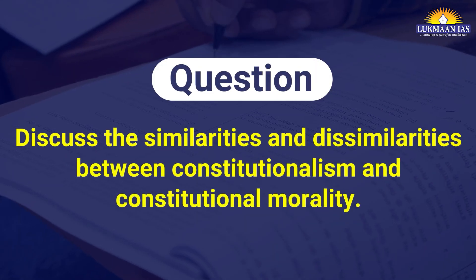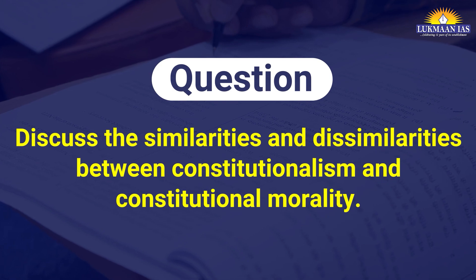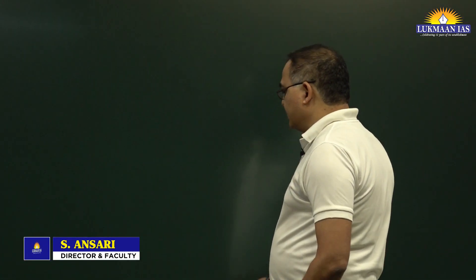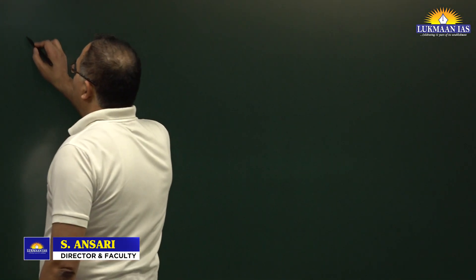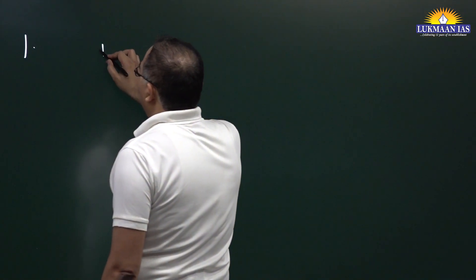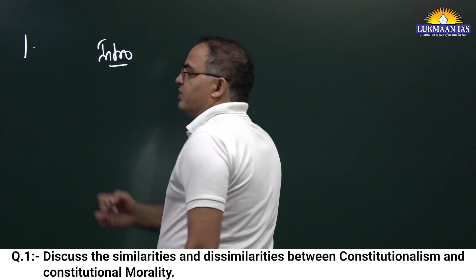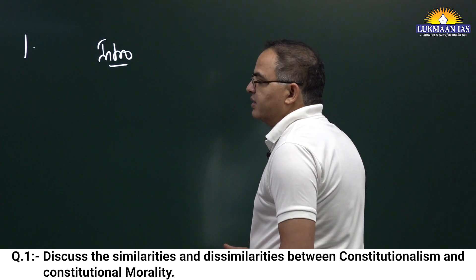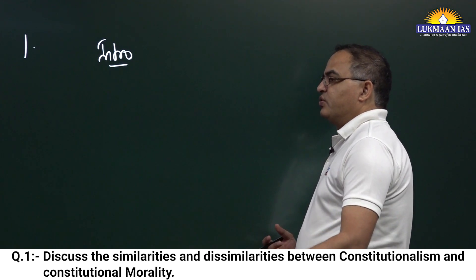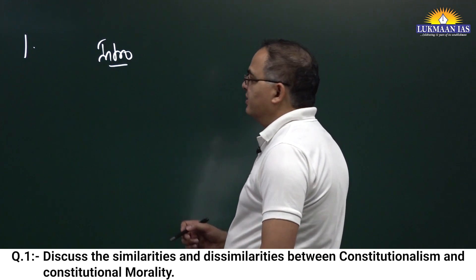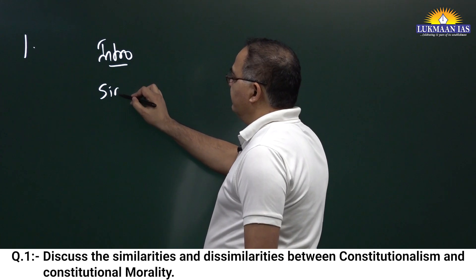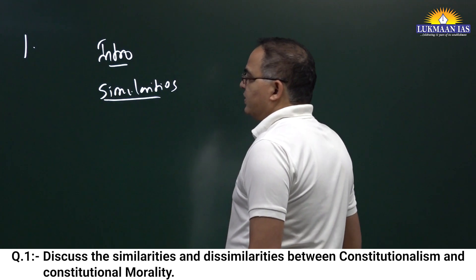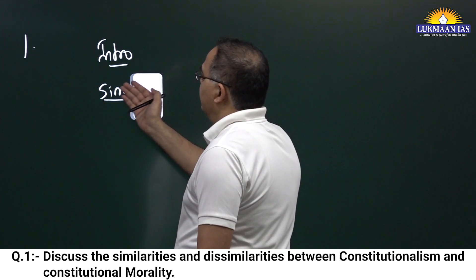First question: similarity and dissimilarity between constitutionalism and constitutional morality. This is a direct question, so for the introduction you can simply say that both constitutionalism and constitutional morality are inspired by a system of constitution or constitutional governance. Then you can go on writing similarities, but it is better to first write the dissimilarities.